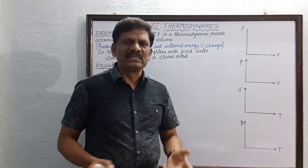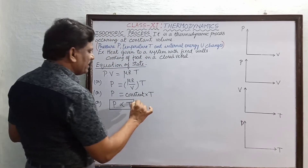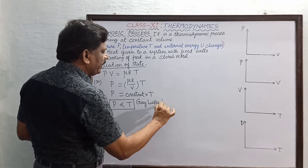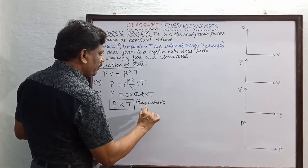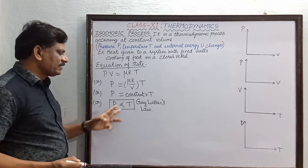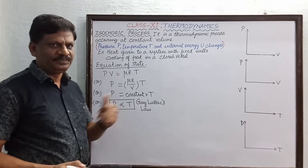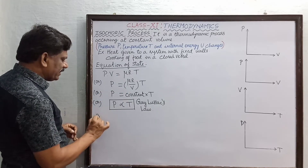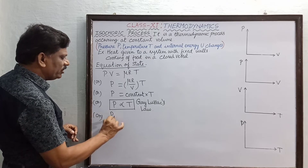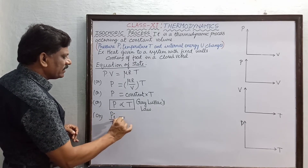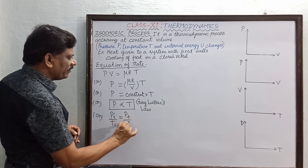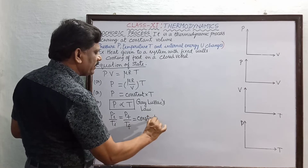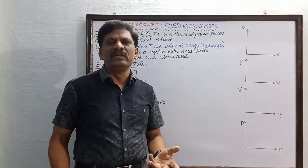In thermodynamics, this law is also called Gay-Lussac's Law: the pressure of the gas is directly proportional to the absolute temperature when the volume is kept constant. We can also write this as P_initial / T_initial = P_final / T_final = constant.